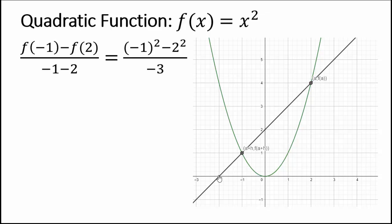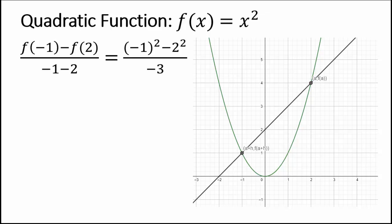Let's take a look at the slope of the line that passes through these two points. So we will have f(-1) minus f(2) over -1 minus 2. You can also do f(2) minus f(-1). You will get the same result. If you plug in points, you can see that (-1) squared is 1 minus 2 squared, which is 4, divided by -3, and that gives us 1.